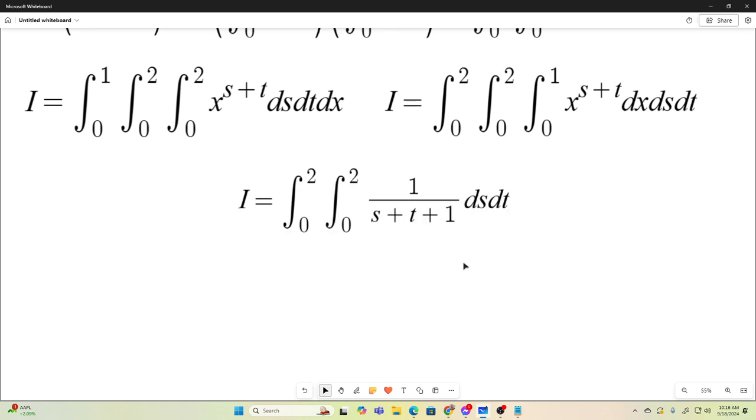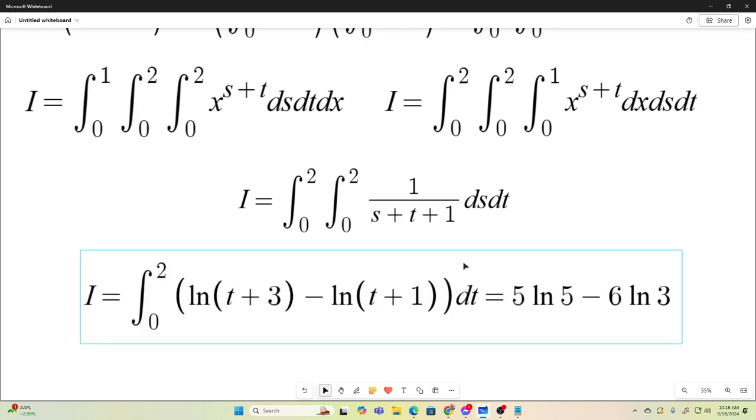So our integral now becomes this. And integrating 1 over s plus t plus 1 ds from 0 to 2 is pretty trivial. And we get this. We just get that it's going to be equal to the natural log of t plus 3 minus the natural log of t plus 1. That's what that inner integral evaluates to. So we replace it.